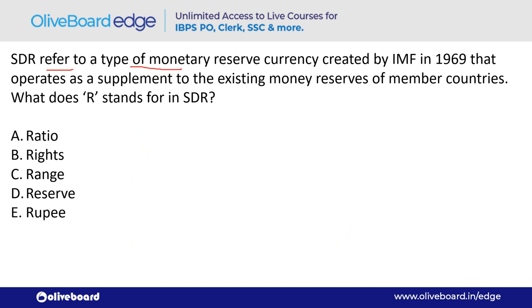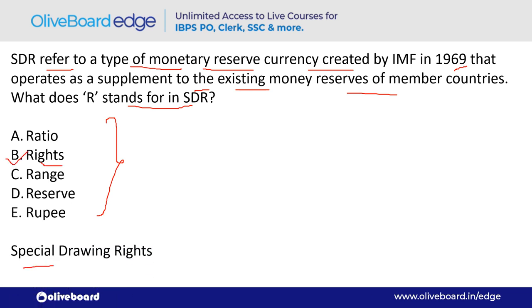SDR refers to a type of monetary reserve created by IMF in 1969 that operates as a supplement to the existing money reserves of member countries. What does 'R' in SDR stand for? R stands for Rights — option B. The full form is Special Drawing Rights.